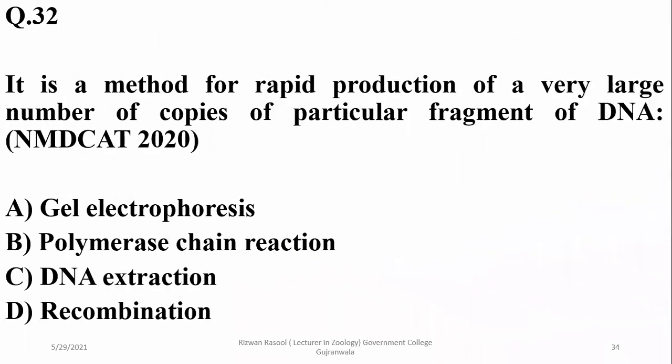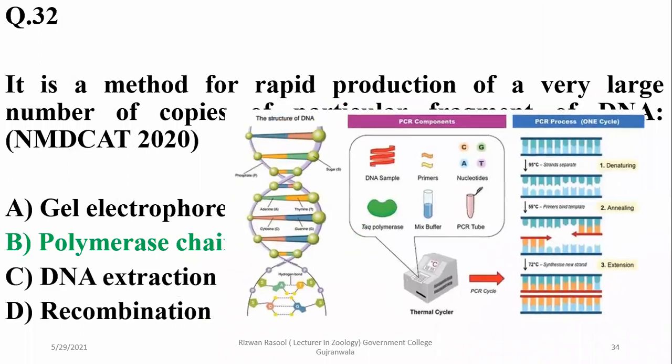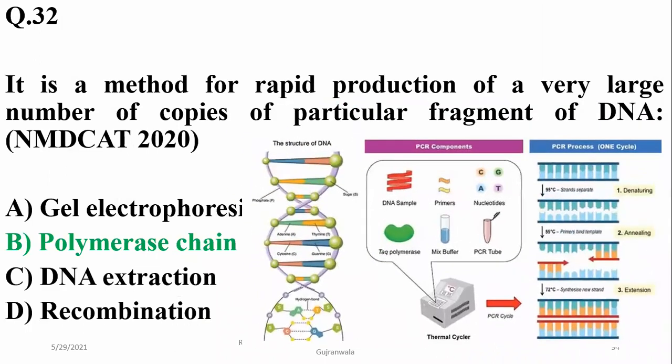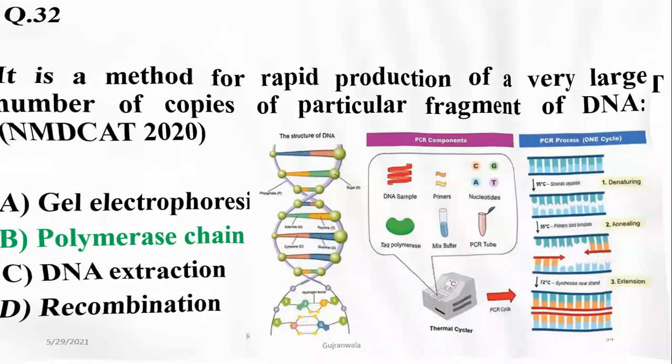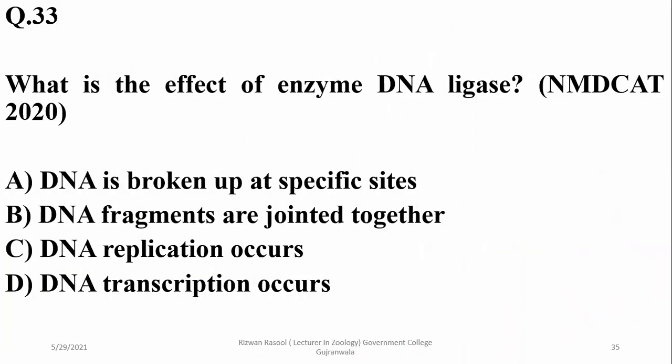The method for rapid production of a very large number of copies of a particular fragment of DNA is the polymerase chain reaction. DNA ligase joins DNA fragments together, beta.